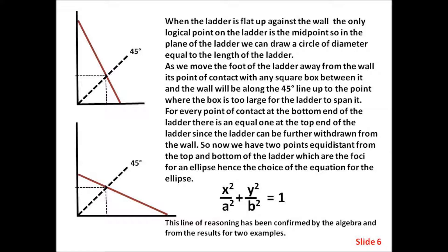For every point of contact at the bottom end of the ladder there is an equal one at the top end of the ladder, since the ladder can be further withdrawn from the wall. So now we have two points equidistant from the top and bottom of the ladder, which are the foci for an ellipse — hence the choice of the equation for the ellipse.